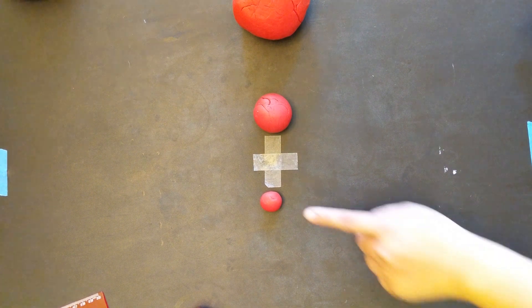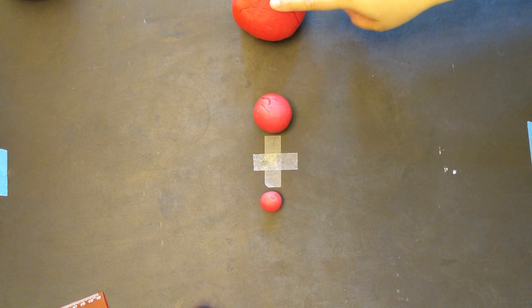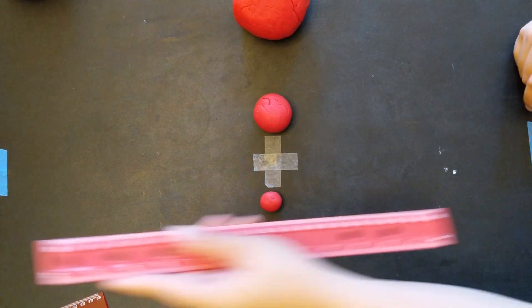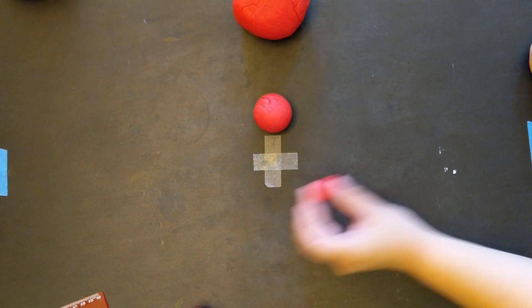Now the earth and the moon should actually be 30 earth diameters apart. Unfortunately, that won't fit on our camera. So we're just going to put them apart for right now.